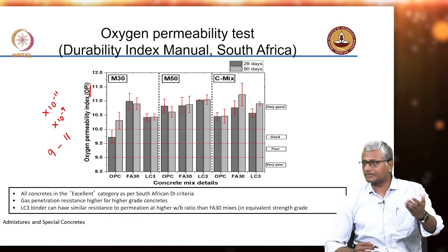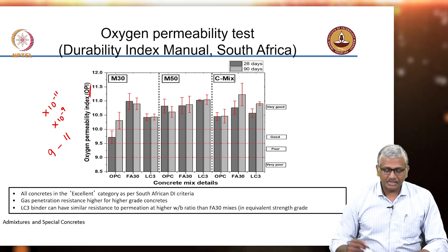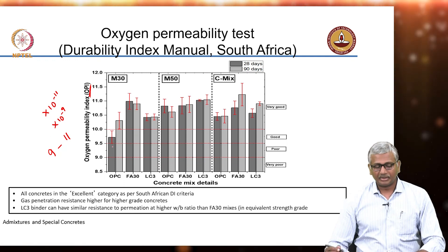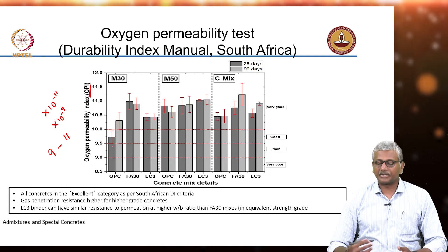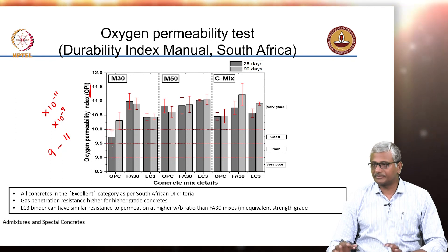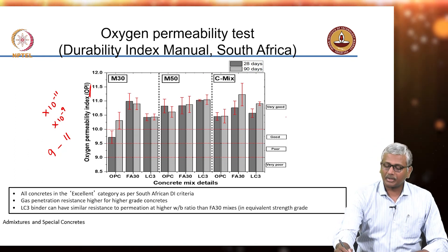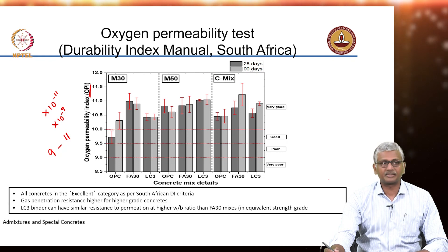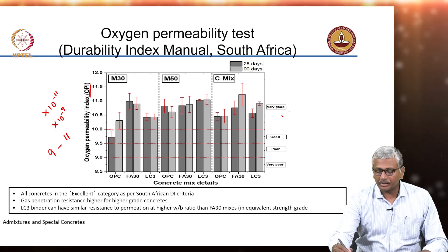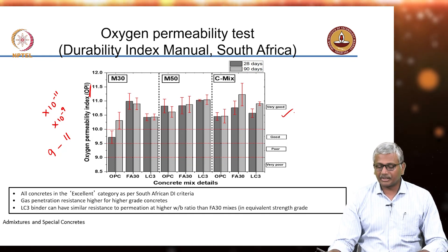The higher the index, the lower the permeability. You can see clearly that compared to OPC systems, fly ash and LC3 systems are marginally better, although all the concretes seem to have significantly good performance. According to the qualitative classification proposed by the South Africans who developed this standard test method, almost all the concretes fall in the 'very good' category.